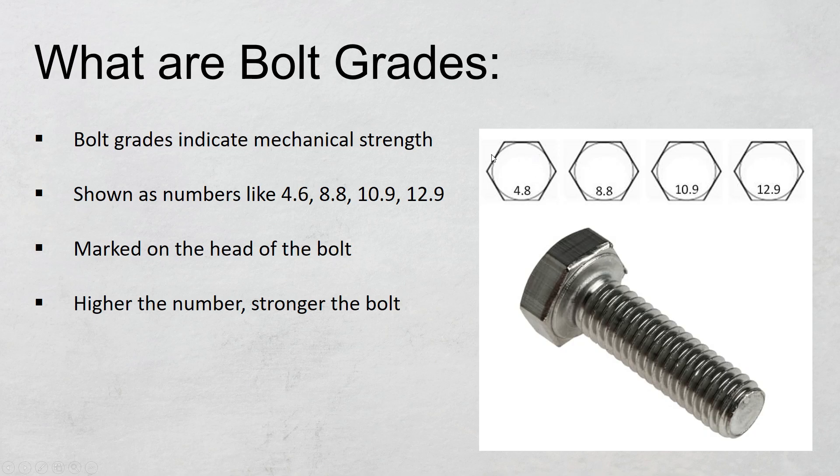Basically, these numbers are marked using a forging tool. The higher the number, the stronger the bolt is. For example, the strongest bolt here is 12.9 and the weakest bolt among these four bolts is 4.8.